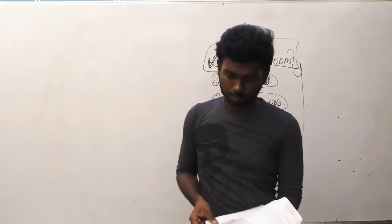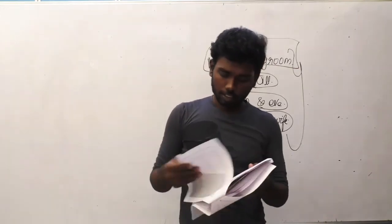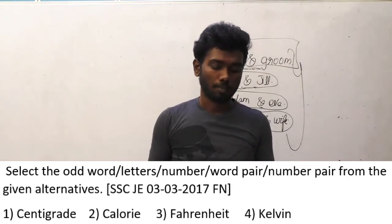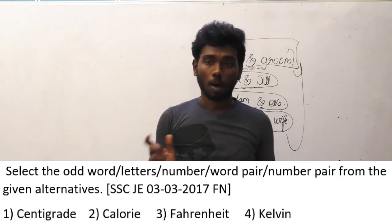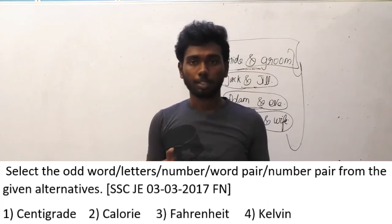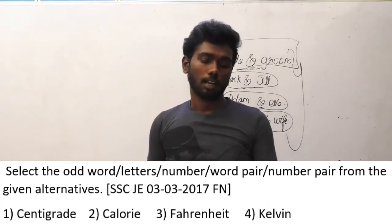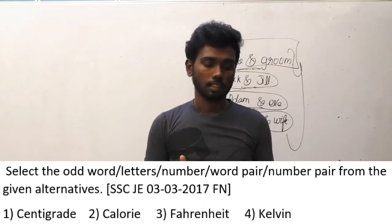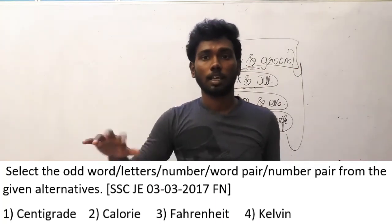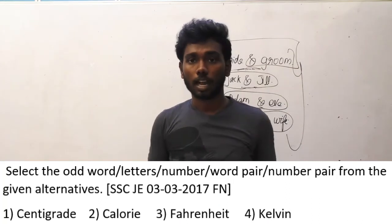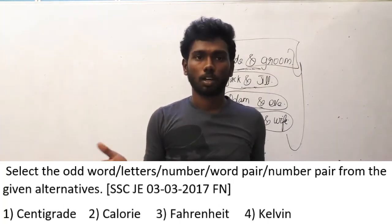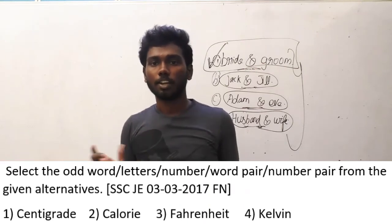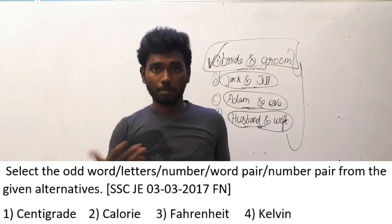Question 48 from SSCJE 3-3-2017 4 noon: select the odd word from centigrade, calorie, Fahrenheit, kelvin. Centigrade, Fahrenheit, and Kelvin all denote temperature. Calorie alone denotes a different value — it relates to food energy, such as the calorie content of an apple or a drink. So calorie is the odd one out.